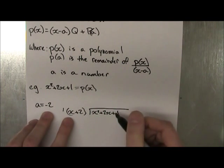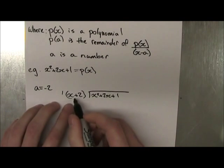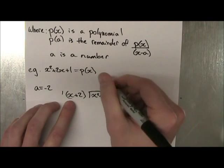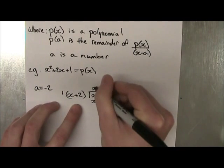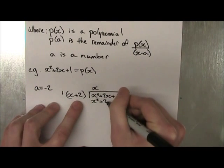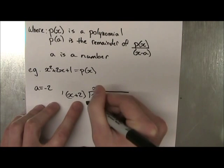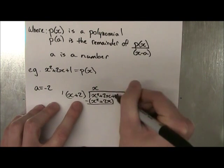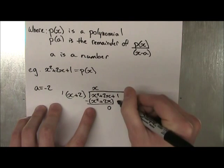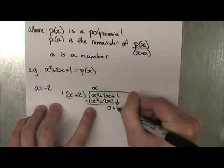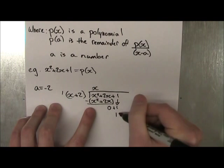So this is long division. You should be able to know how to do this. So we're going to do what times x is equal to x squared. So it's x. x times x is x squared. x times 2 is plus 2x. And now we subtract this by this. And as you can see, it's 0.